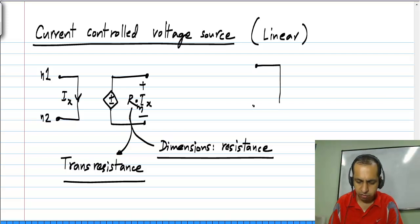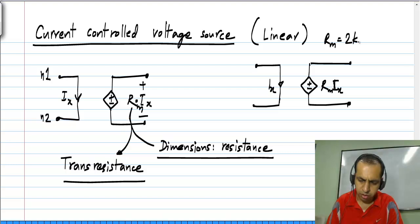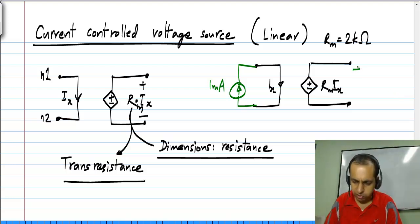Let us say we have a controlled source defined like this with Rm being 2 kilo ohms. That means that if you connected a 1 milliamp source like this, you would measure 2 volts across these terminals.